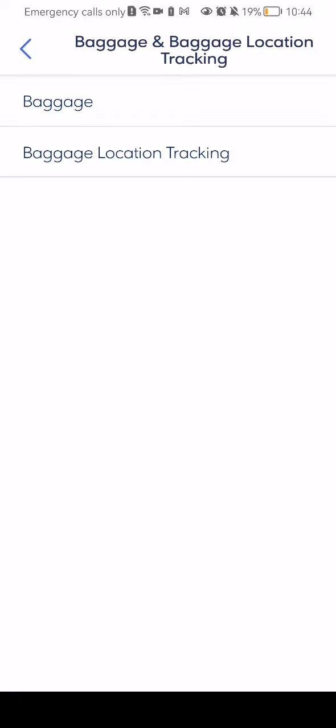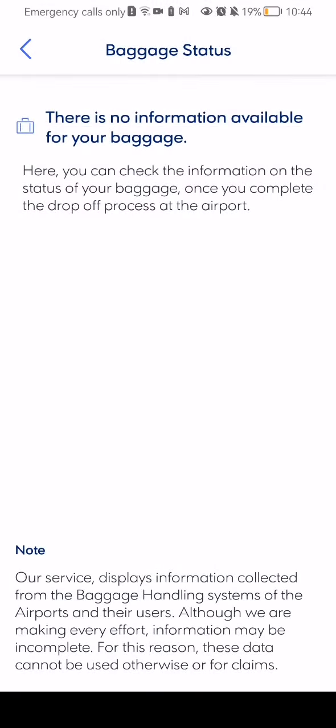The other option is the baggage location tracking. If you enter here, you can see that in my case I have no information available for my baggage, because I don't have any baggages — I haven't made a trip with baggages yet. But here you can basically see the information about your baggages when applicable.